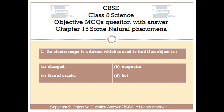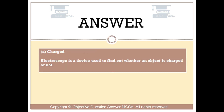The right answer is Option A — Charged. An electroscope is a device used to find out whether an object is charged or not.